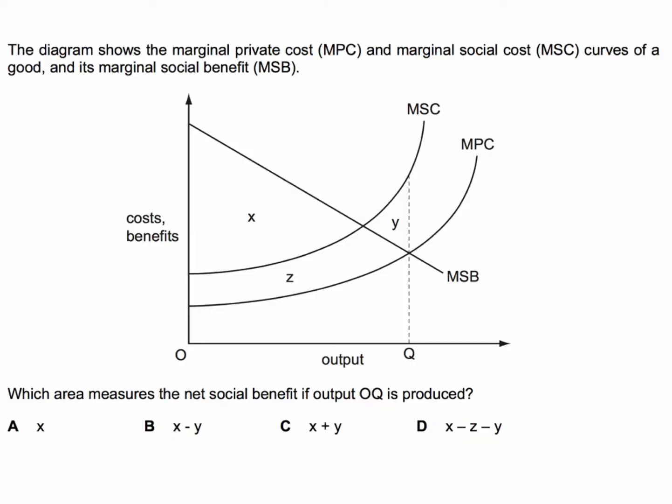So here's our question. It contains an analysis diagram. The diagram shows the marginal private cost, MPC, and the marginal social cost, MSC, of a good, and its marginal social benefit. Which area measures the net social benefits if output OQ is produced? Now a clue here: OQ is the private optimum where private costs and benefits are optimised. But what's the net social benefit of that level of output?